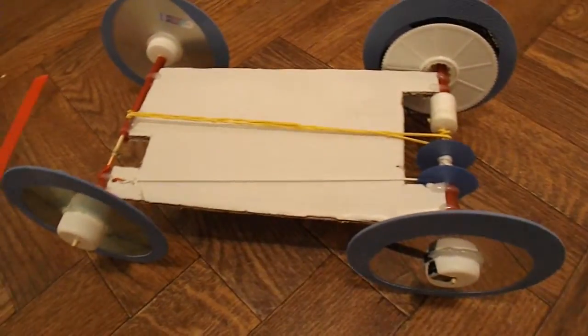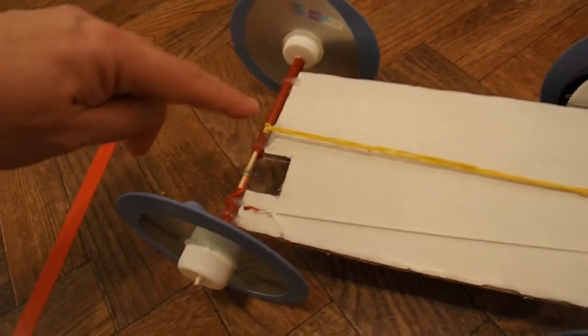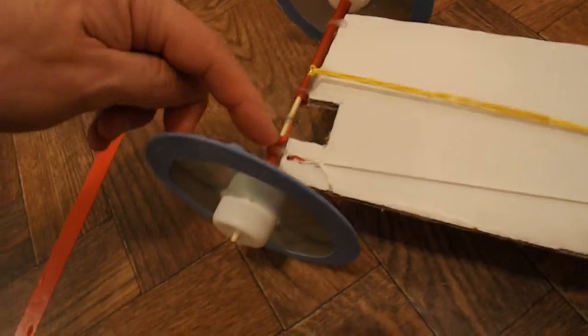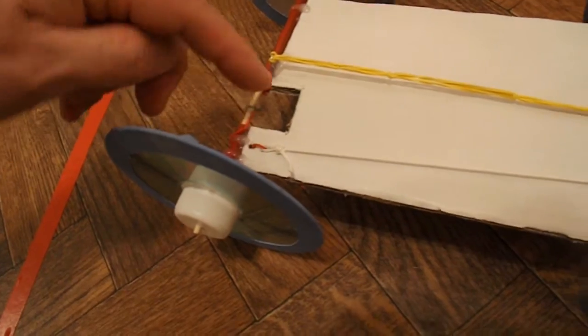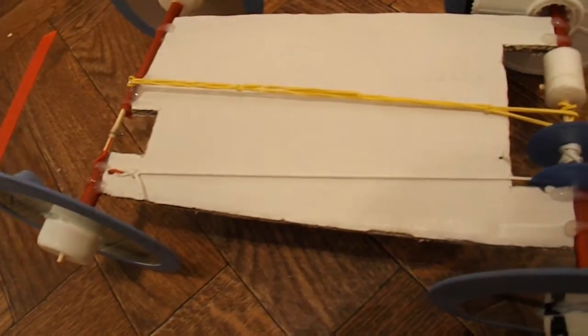Right, since I showed you the build, instead of attaching the string to the hook with the rubber band, I've put another paper clip through the cardboard there, just so that I can keep the string and the rubber band separate.